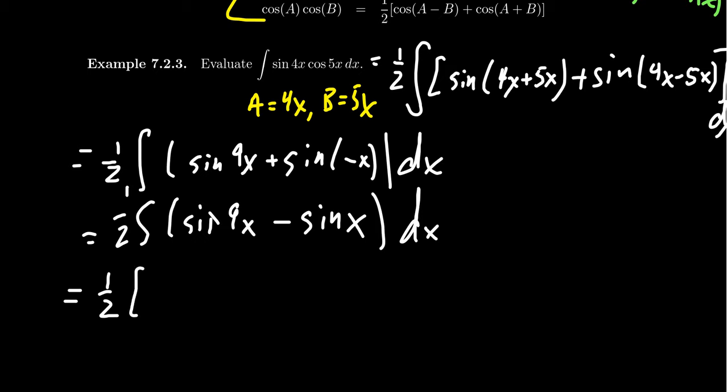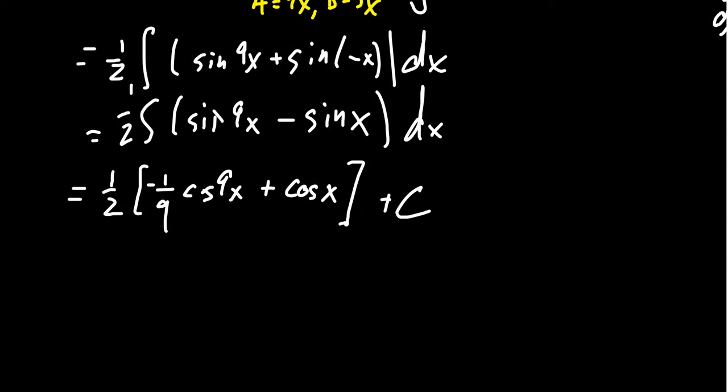We're going to get the one-half still out in front. The anti-derivative of sine of 9x. Because of the 9x that's on the inside, the anti-derivative is going to be one-ninth in front of it because there's a very basic u-substitution there. The anti-derivative of sine is actually a negative cosine. So we get negative one-ninth cosine of 9x. And then the other one's going to become positive cosine of x plus a constant. Feel free to distribute that one-half through if it helps you there. So in pretty form, we're going to write this as one-half cosine of x minus one-eighteenth cosine of 9x plus a constant.